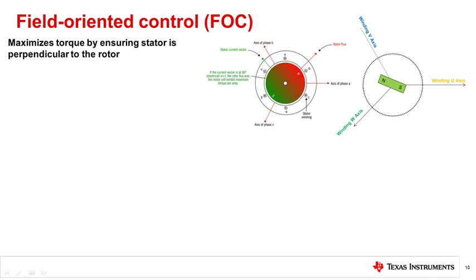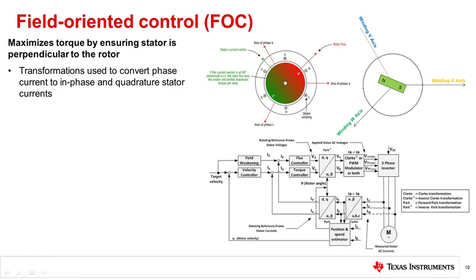It is an improved version of sinusoidal commutation that dynamically modulates the PWM varying voltages of the three phases to maximize motor power and efficiency, and while minimizing torque ripple and noise. To make the stator current perpendicular to the rotor flux, a series of mathematical transformations are used to convert three-phase stator currents to direct, or parallel, and quadrature, or perpendicular stator currents.